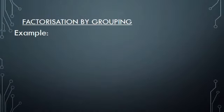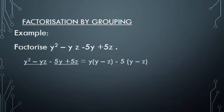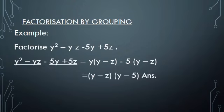Example: factorize y² − yz − 5y + 5z. Here we make these terms into two groups: (y² − yz) in one group and (−5y + 5z) in another. The first group factorizes as y(y − z) and the second as 5(−y + z), or −5(y − z). In both groups we have (y − z) as a common factor, so the factorization is (y − z)(y − 5).